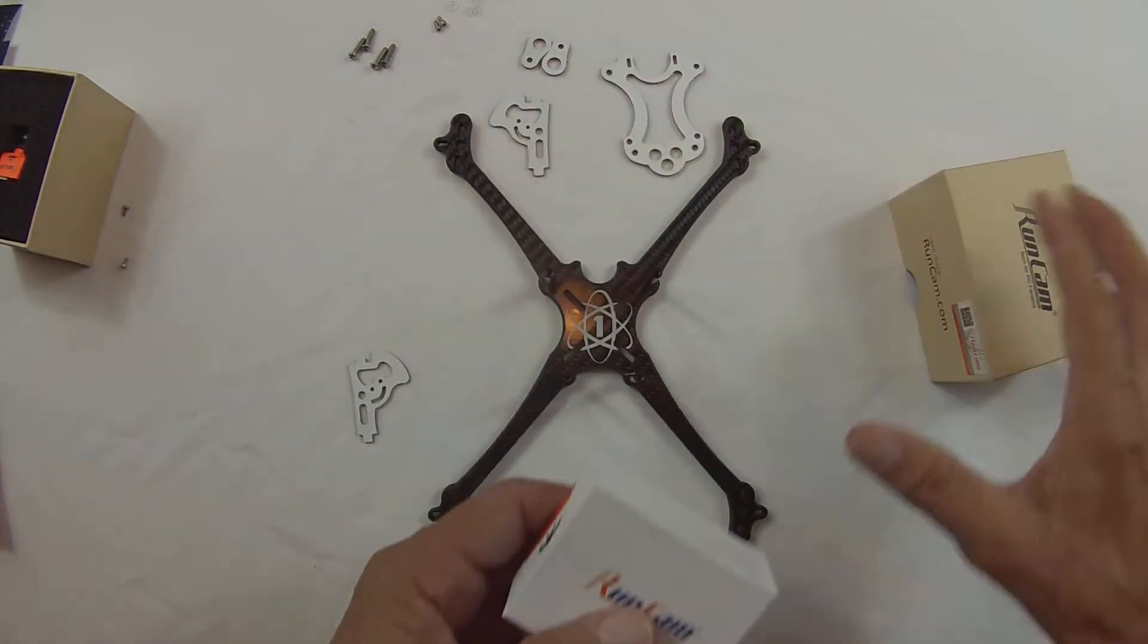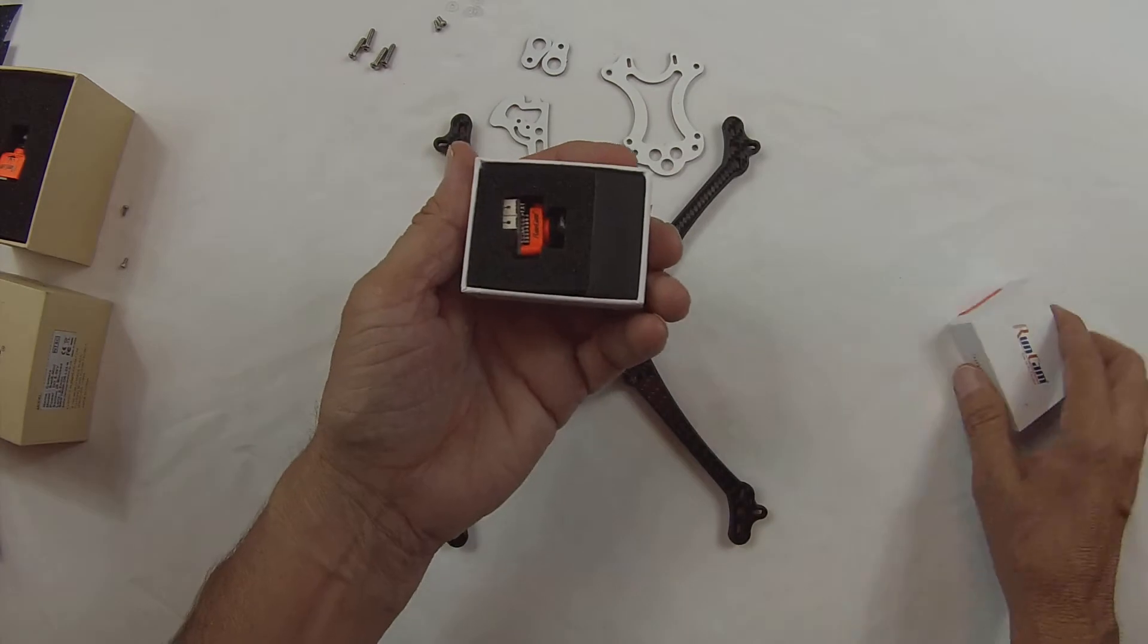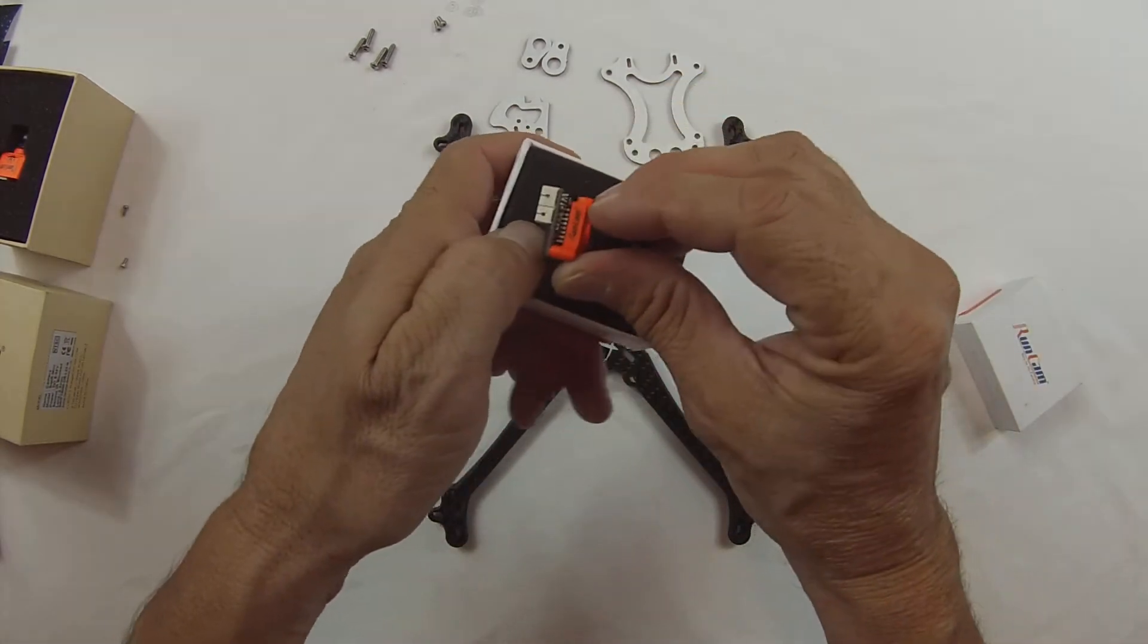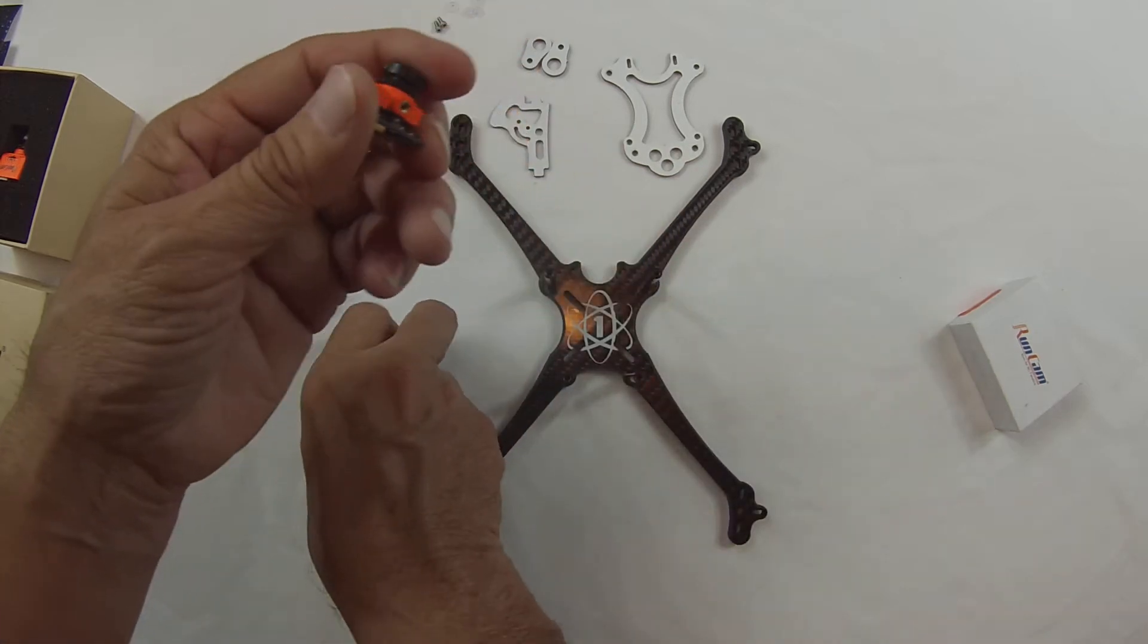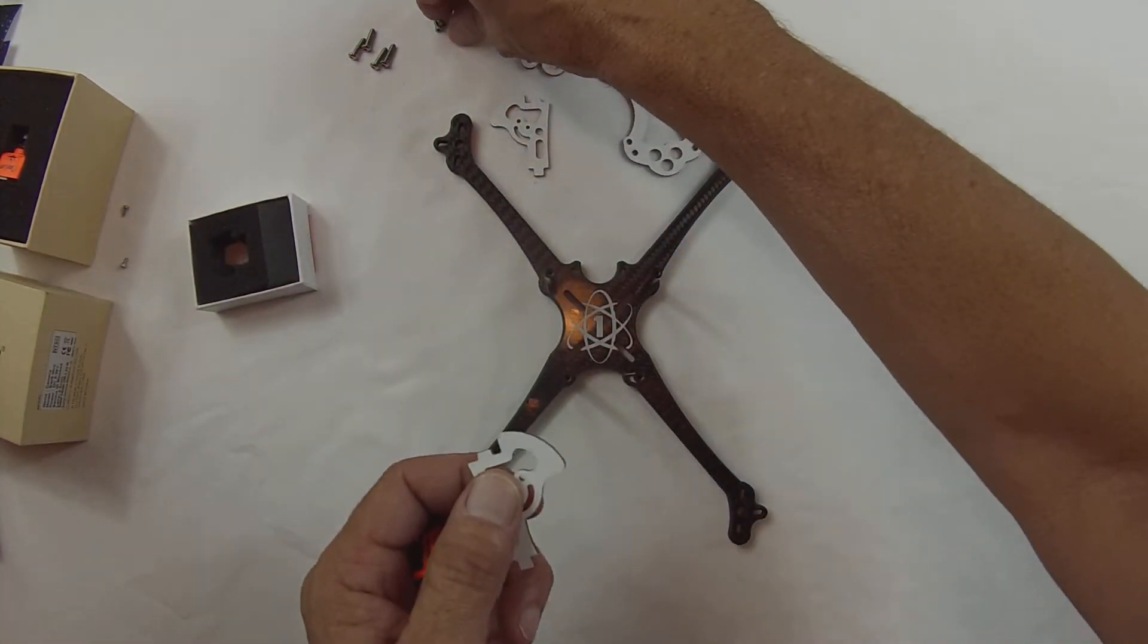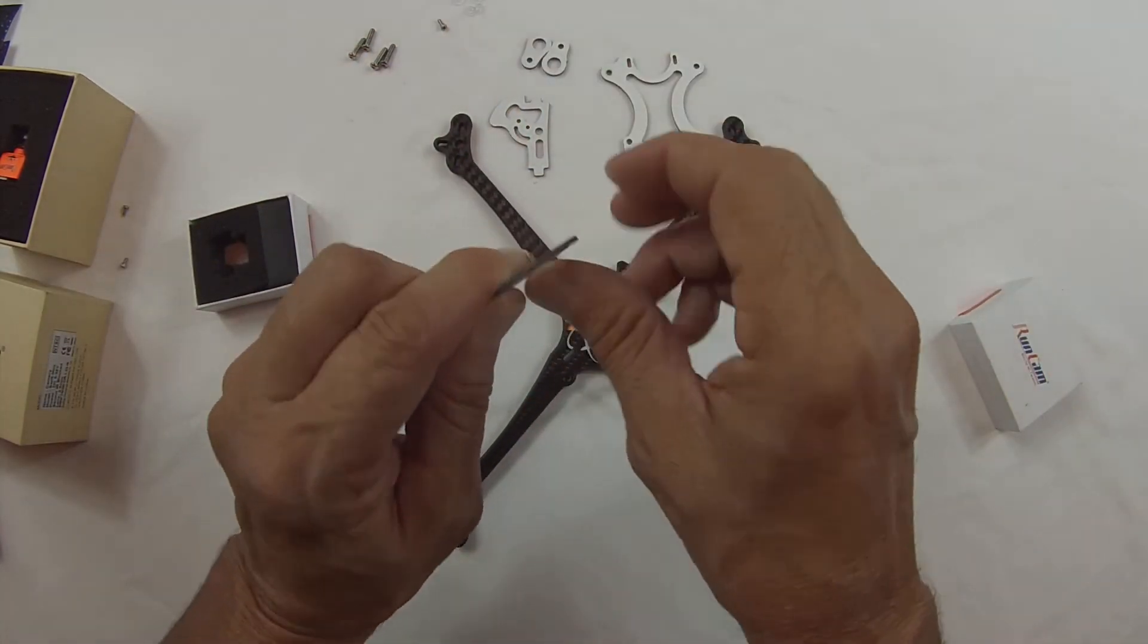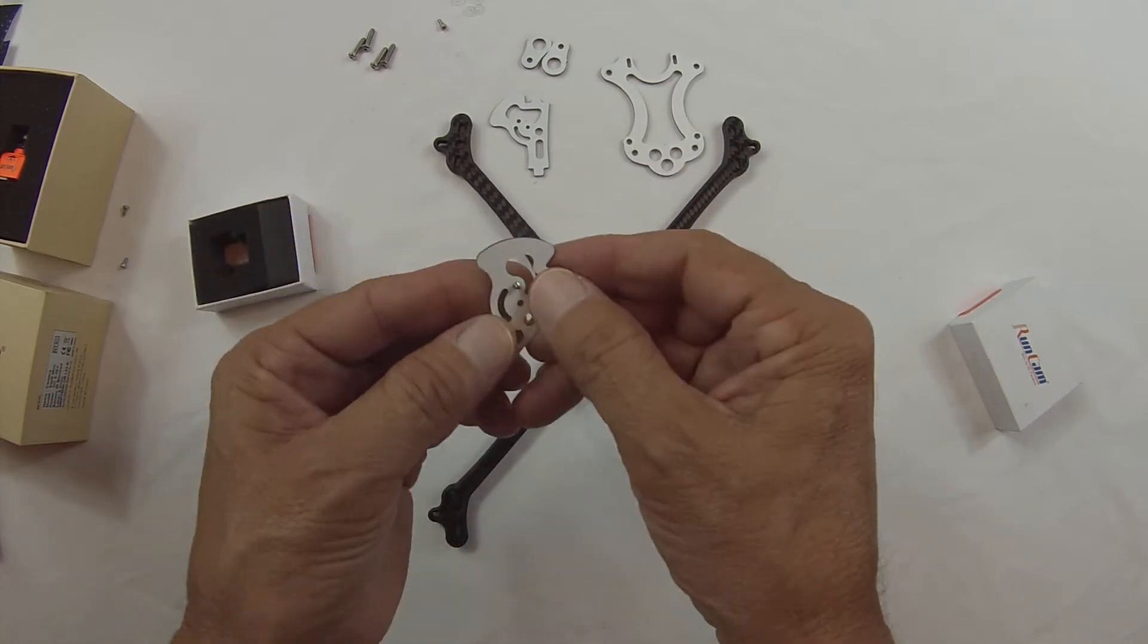And we're going to go ahead and put together with this camera, the Micro Runcam. Because I know a lot of guys want to save weight, especially if you guys are racing and all that good stuff. So you want to use the long one. Put it like so.